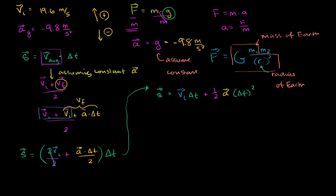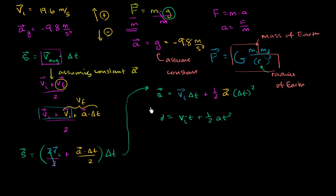In many classes this is written as d = vi·t + ½a·t², using d for displacement and t instead of Δt — same thing. The key point is that this formula is straightforward to derive: it comes directly from displacement equals average velocity times change in time, assuming constant acceleration. So even when you're 30, 40, or 50 years old — or an engineer sending a rocket into space without a physics book — you can derive it from first principles.